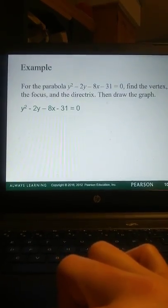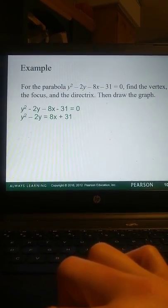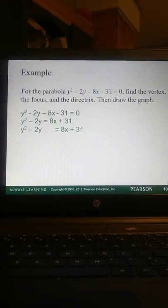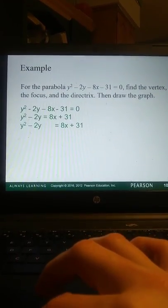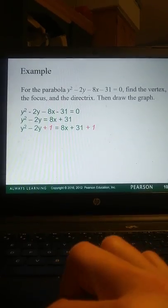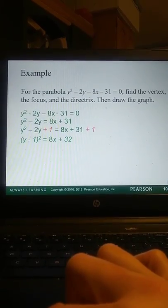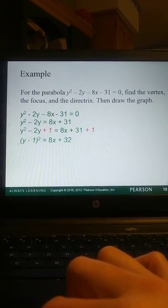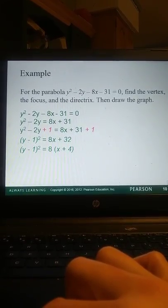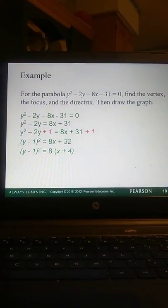And one more. This one's with respect to Y. So we're going to complete the square for Y now. Divide 2 by 2, and we get 1, and then 1 squared is 1. So we add 1 to each side, and then we have a perfect square on the left, and then we have 8X plus 32, so factor out an 8, so now we have X plus 4.